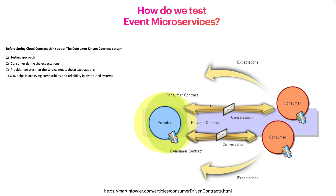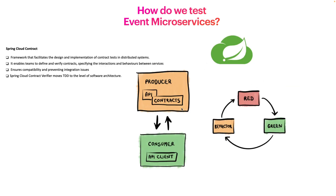Using consumer-driven contracts helps in achieving compatibility and reliability in a distributed system. It promotes collaboration and clear communication between services, providers, and consumers. We have a contract where one side states the expectations and the other ensures those expectations. This is the concept of the consumer-driven contract pattern. Going back to Spring Cloud Contract, we can understand that Spring Cloud Contract is a Spring Boot project that helps developers implement the consumer-driven contract approach. It's just a framework, and its advantage is that it ensures compatibility and prevents integration issues. Talk is cheap — let's show the code.